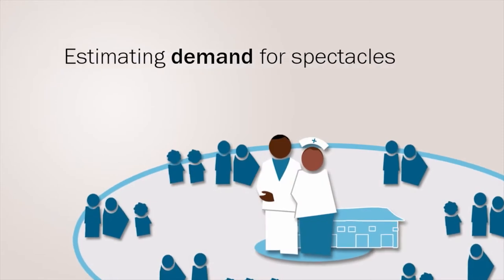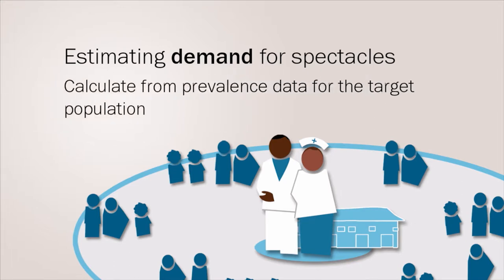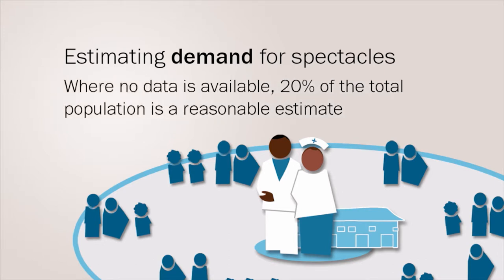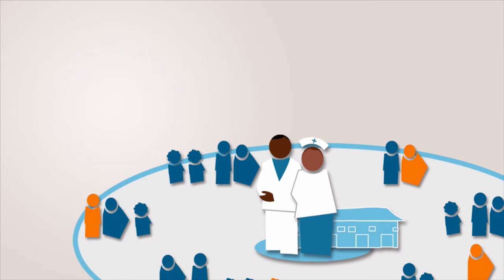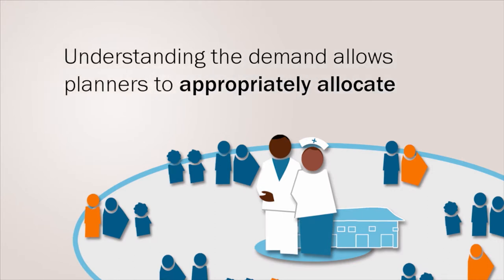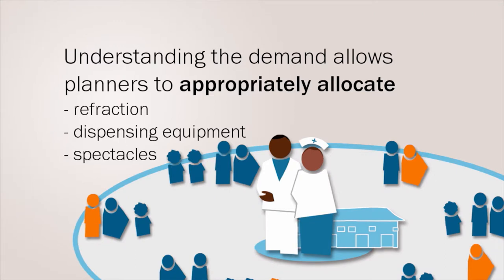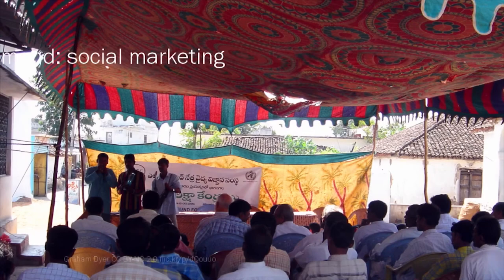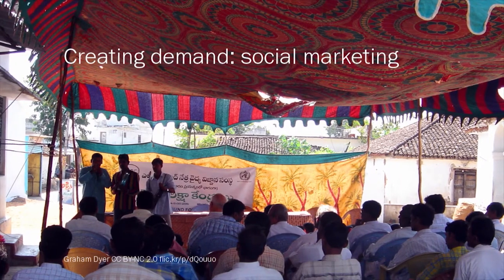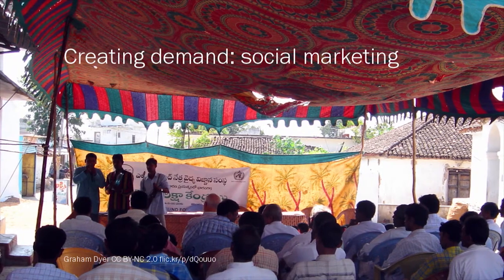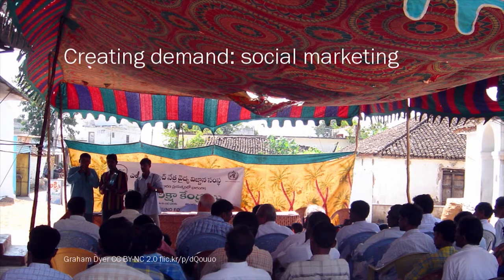Due to the lack of evidence, we have to use estimates to guide development of refractive error services. Estimating the demand for spectacles can be calculated from prevalence data for the target population or from similar settings. Where no data is available, 20% of the total population is a reasonable estimate. Understanding the demand allows planners to appropriately allocate equipment, spectacles, and trained personnel. Social marketing of refraction services has been a successful model in creating demand and raising awareness, particularly in India through vision centres.